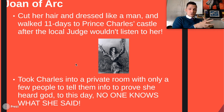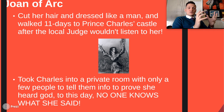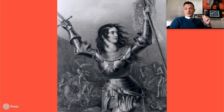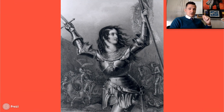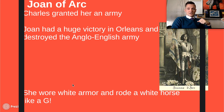She cut her hair, dressed up like a man, and walked 11 days all the way to Prince Charles' castle — the leader of France at the time. After a local judge wouldn't listen to her, she pleaded in front of the Prince of France: she had been hearing the voice of God, and He told her she was meant to lead France to victory. She took Charles and his bodyguards into a private room, and no one to this day knows what she said, but Charles came out saying, 'This woman has heard God.'